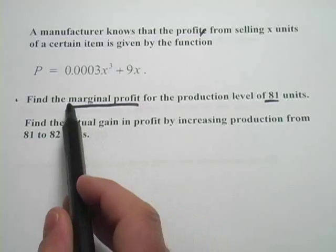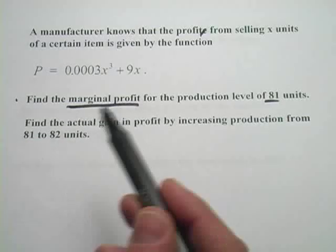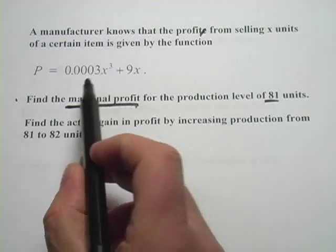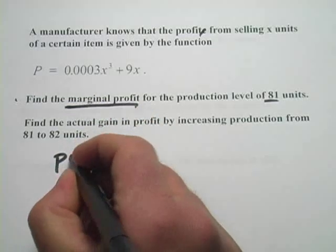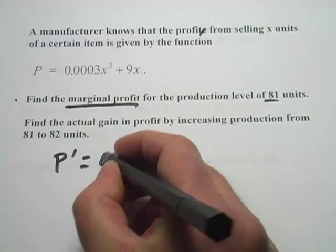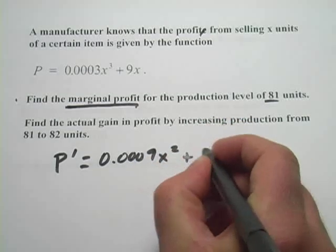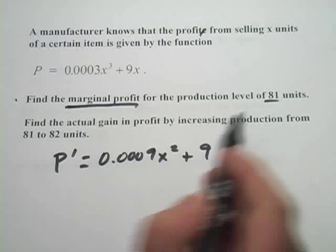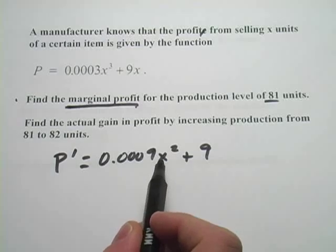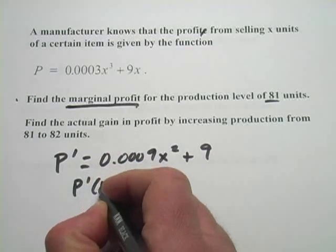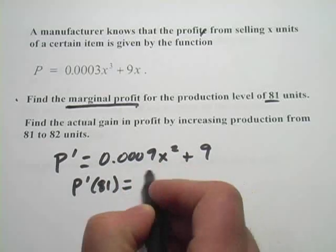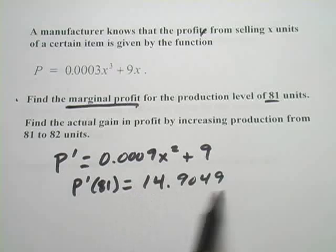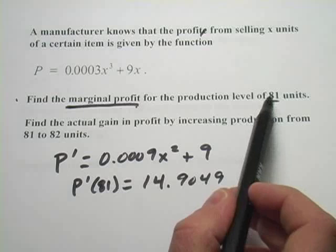So the marginal profit, what it should tell you is the profit from producing one more unit. And we get that, we get an approximation for that by taking the derivative of this function. So the marginal profit function is the derivative of the profit function. So let's go ahead and find p prime here. It shouldn't be too hard. 3 times 0.0003 should be 0.0009 x squared plus 9. So this is our marginal profit function. And we want to find that for a production level of 81 units. That's what x represents. So we just plug in 81 for x. So to find p prime of 81, and I'm going to let you do all the math on that, it should come out to 14.9049.